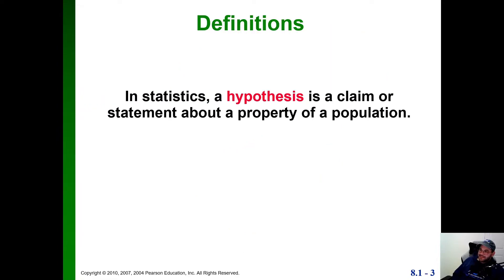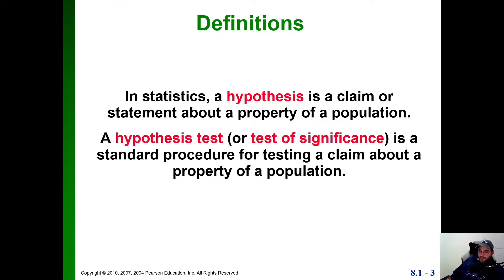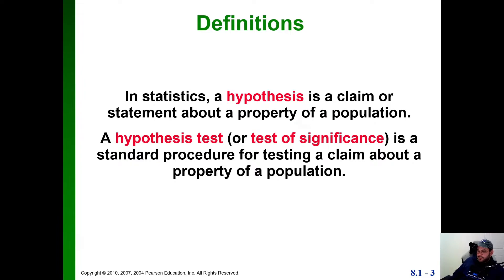So, definitions. In statistics, a hypothesis is a claim or statement about the property of a population. The property of the population — it can be the mean, it can be standard deviation, it can be proportion. We can state a whole bunch of different claims, such as the mean is greater than some value, less than some value, or equal to some value. The same can be done for proportion and standard deviation.